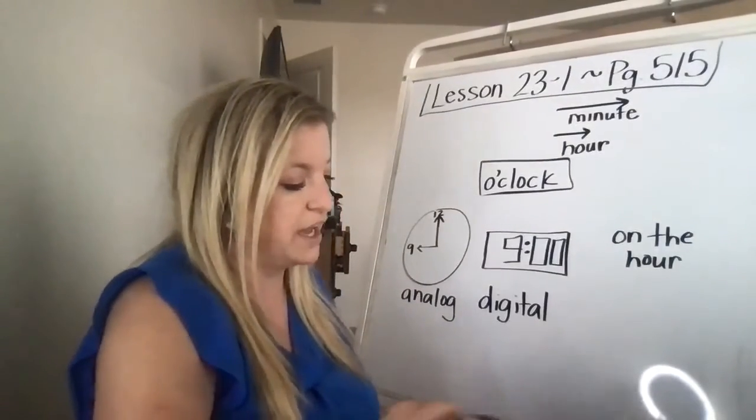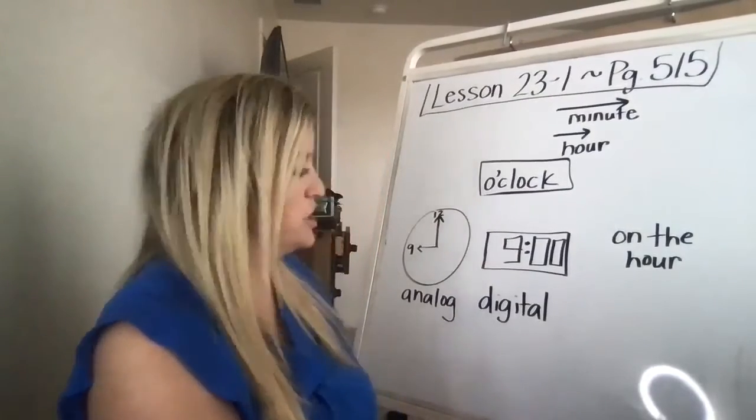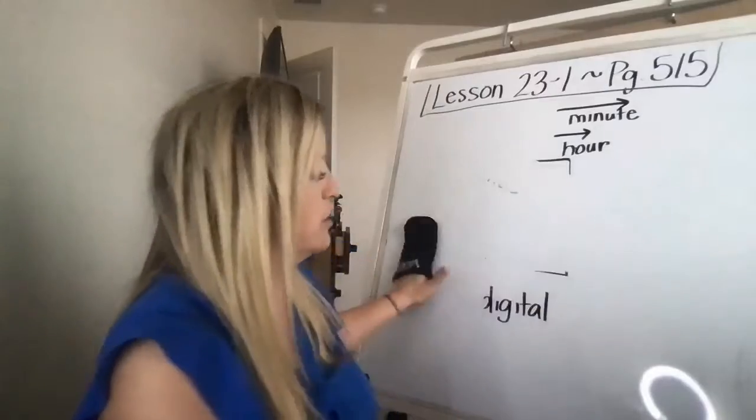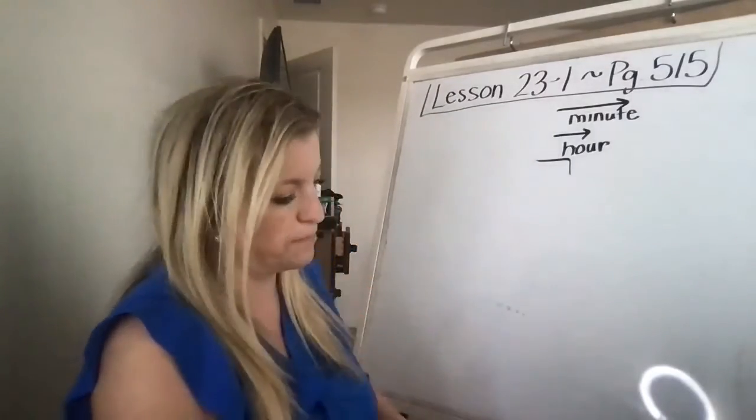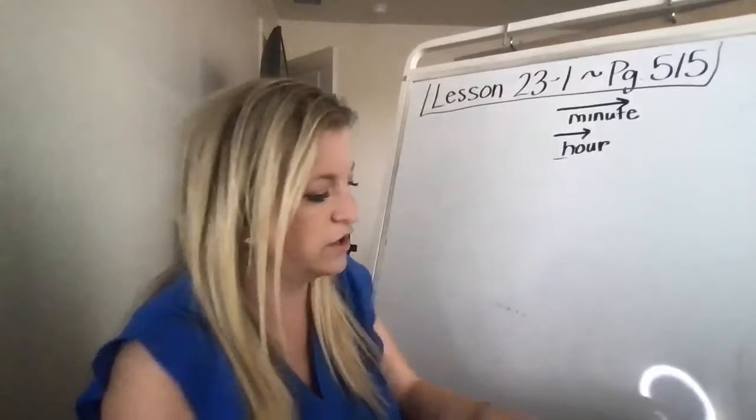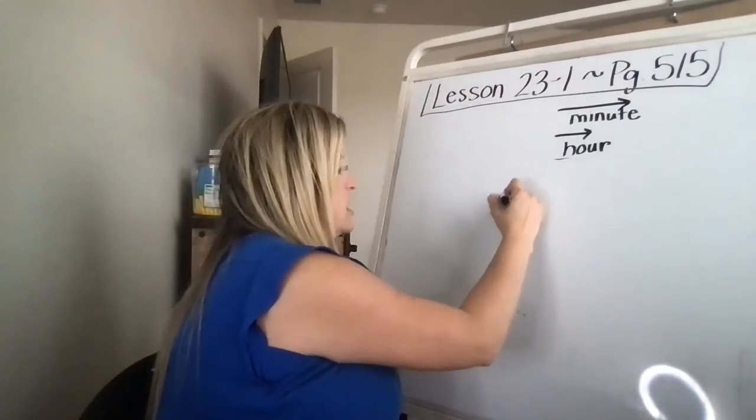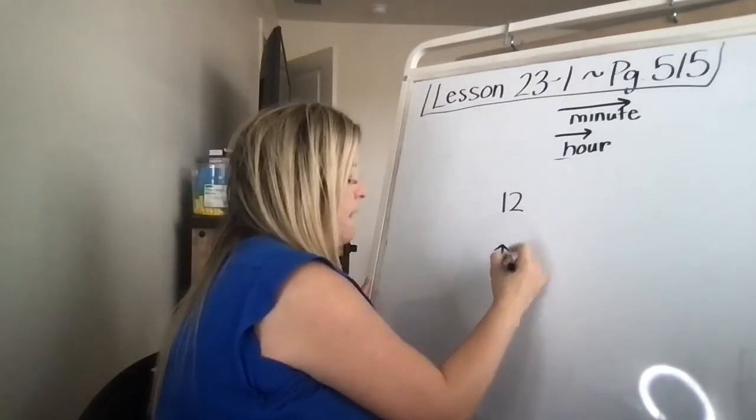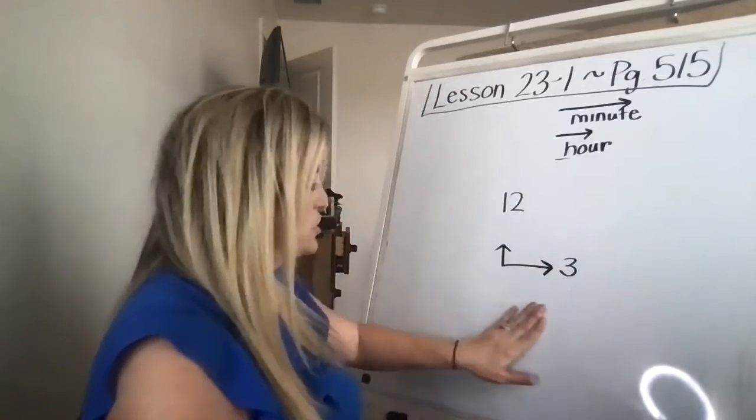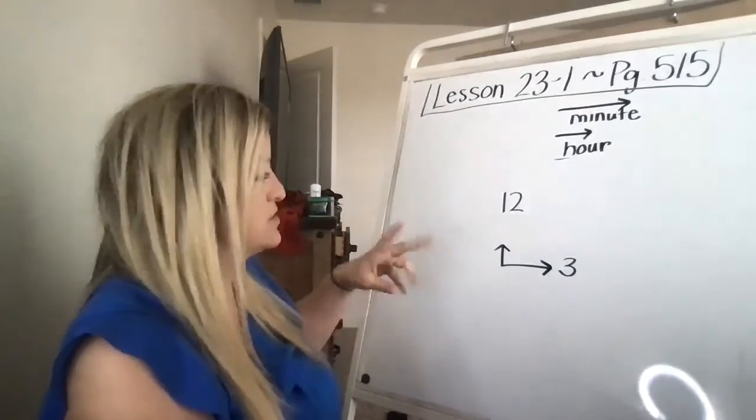Number two says, Igo tries to show three o'clock. Is she right? So just on the same page down below on page 517, Igo wants to show three o'clock, but she draws 12 and three is where she goes. So is she right? Circle yes or no?